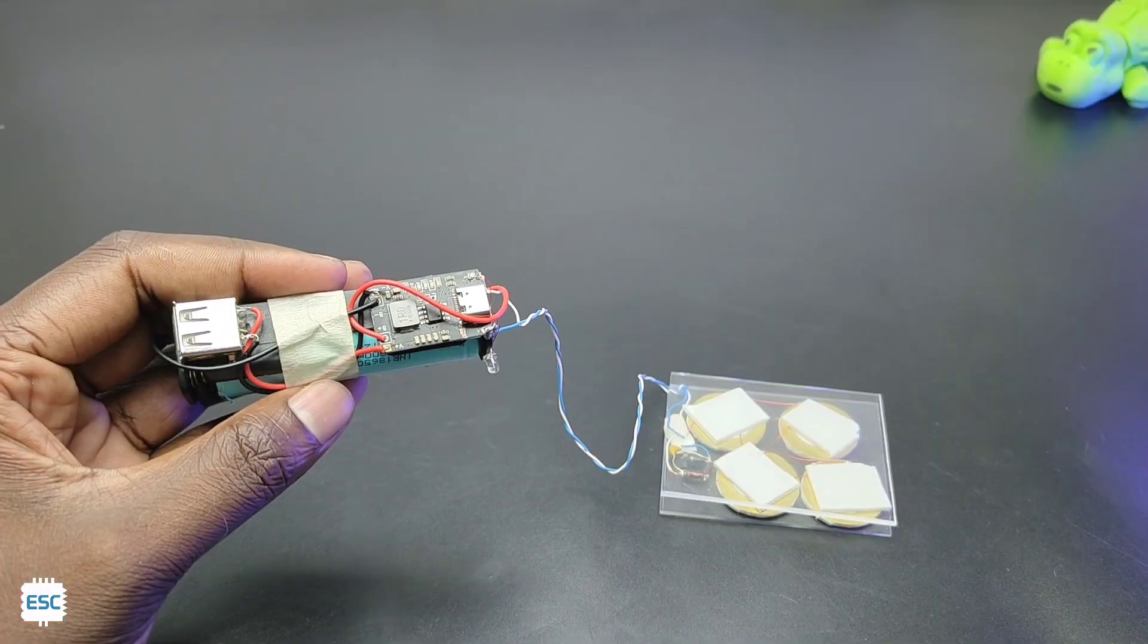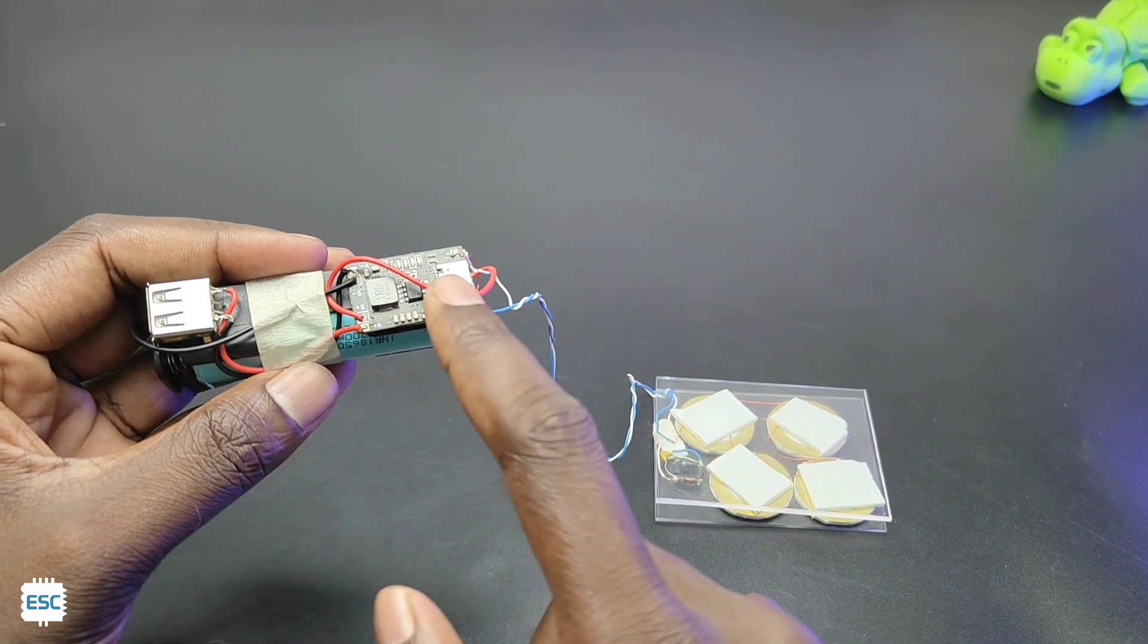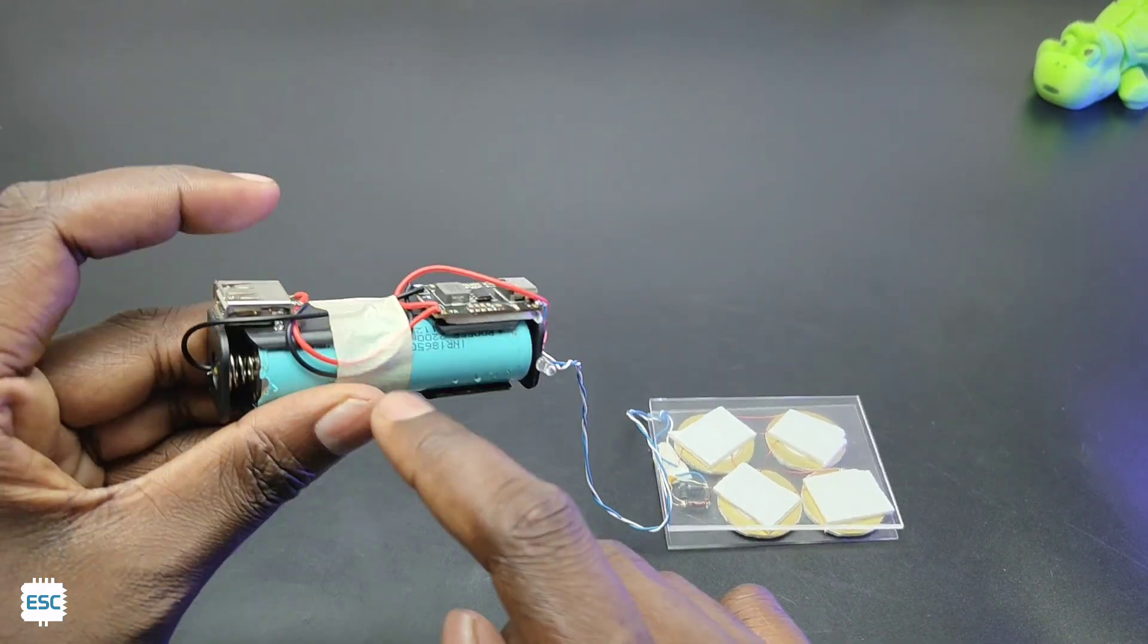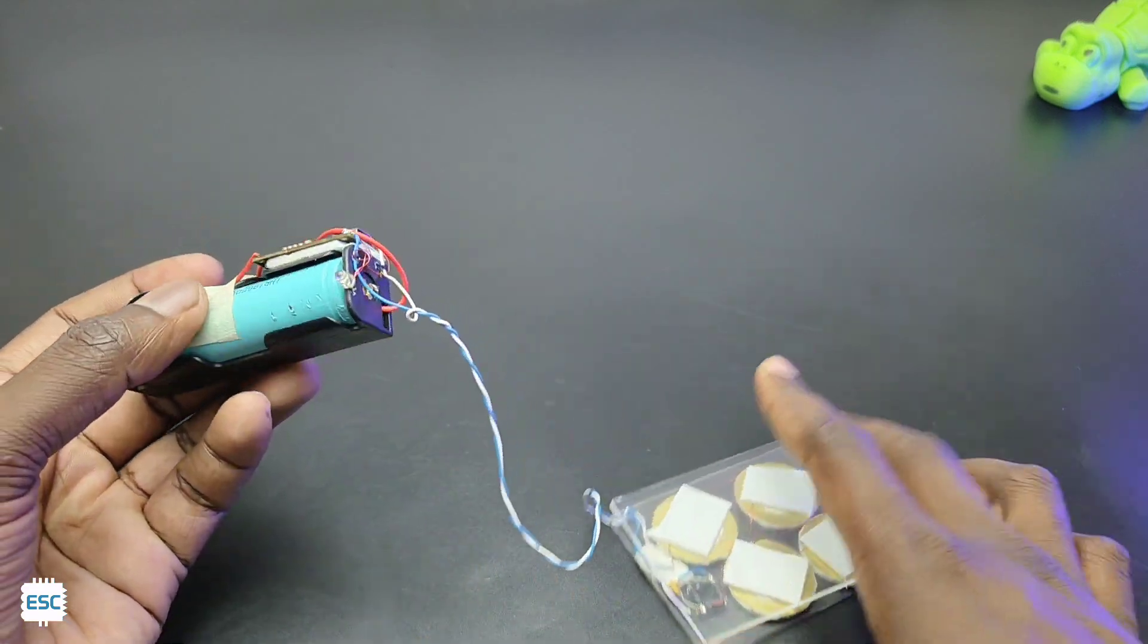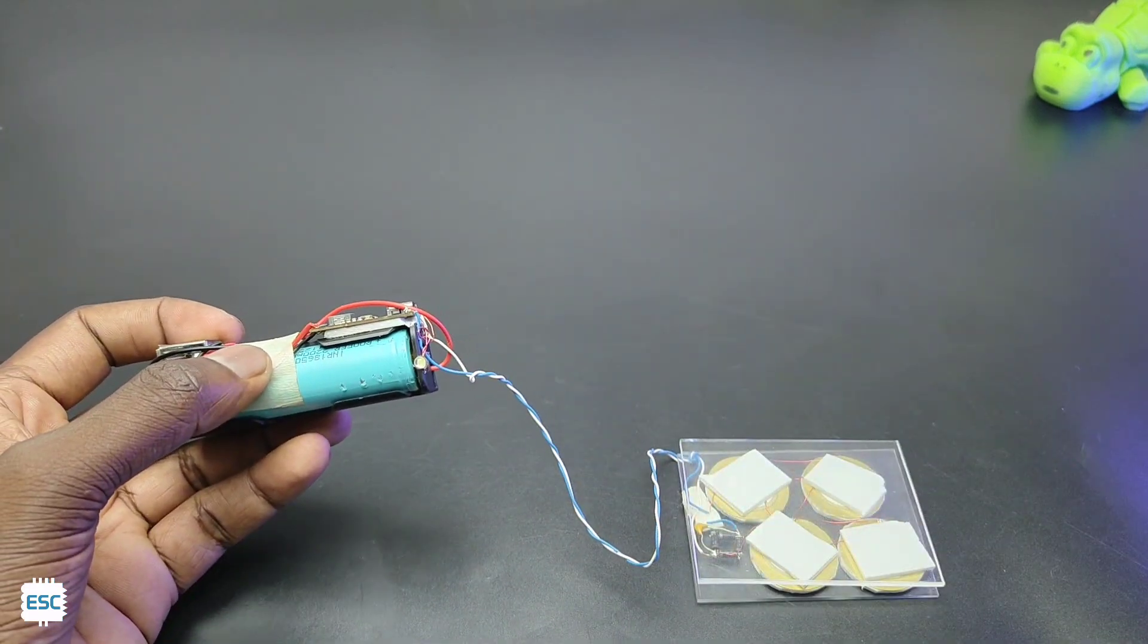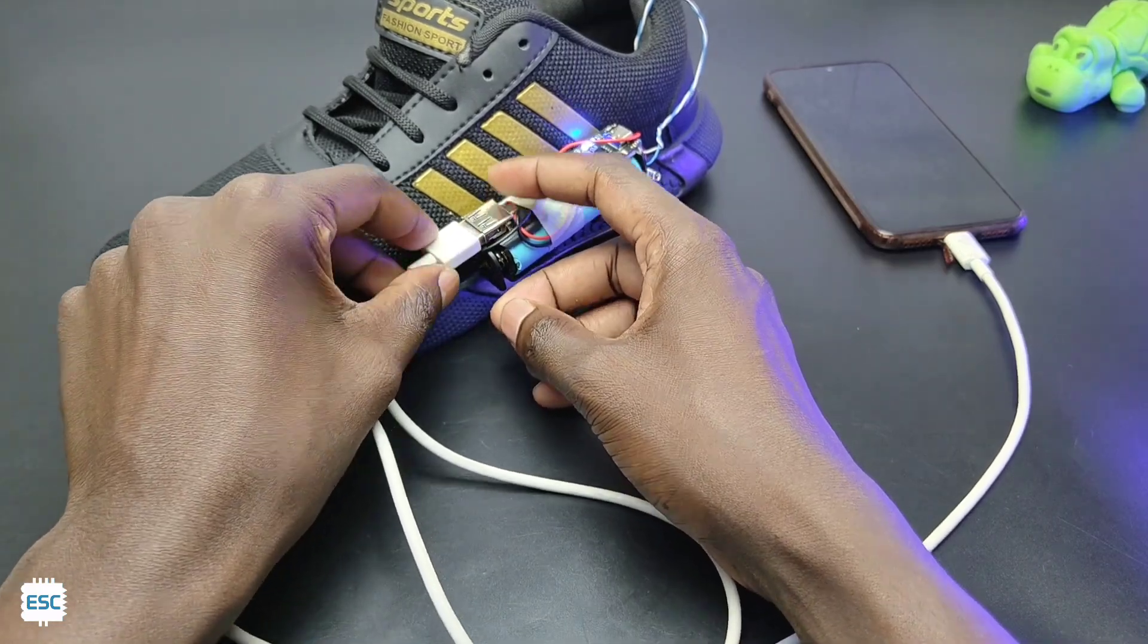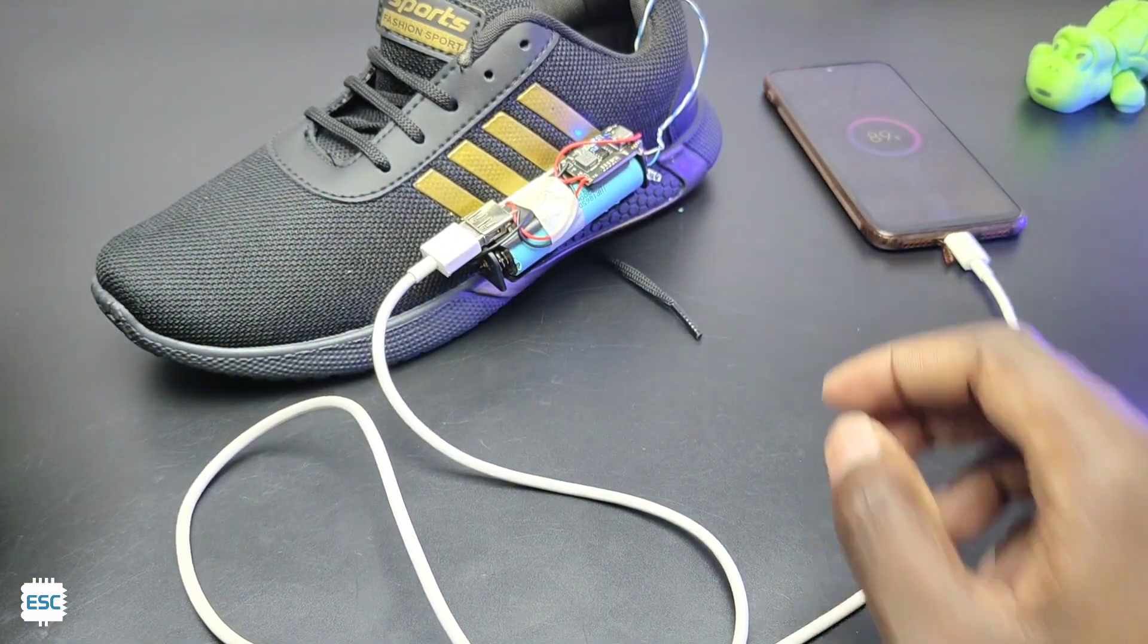So some way we failed but we can demonstrate the concept. So here I have connected the output of piezo to a 3.7V lithium ion battery. Here I added the lithium ion charger plus booster module. We can connect and charge our mobile phone using this circuit like this.